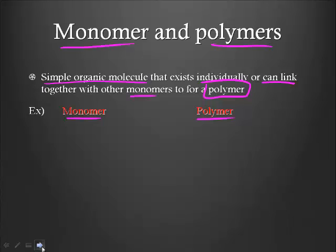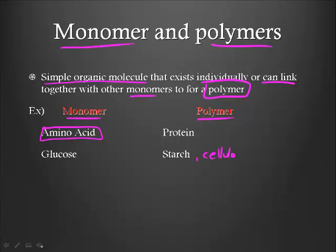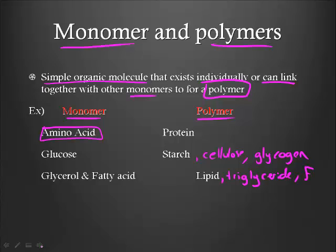So amino acid is the building block or the monomer, and it makes up protein. Glucose is the building block or the monomer, and it makes up starch or cellulose or glycogen. We also have glycerol and fatty acid - what that makes up is lipid. We also call it a triglyceride, or in other words, a fat. And then finally we have nucleotides, which we use to make up our nucleic acid like DNA and RNA.